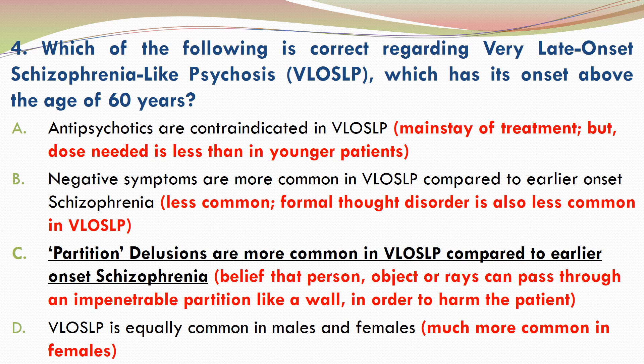B is incorrect because negative symptoms are less common in VLOSLP. Formal thought disorder is also less common. D is incorrect because VLOSLP is much more common in females.